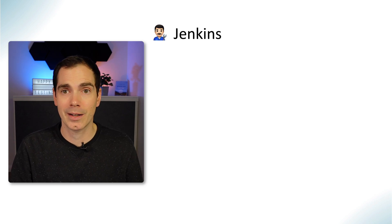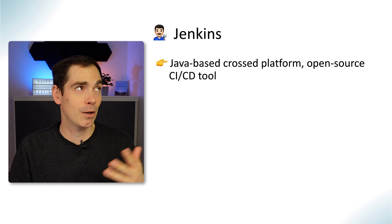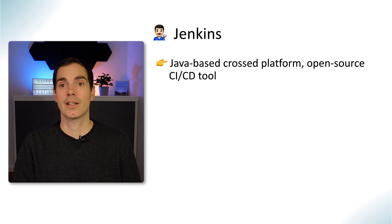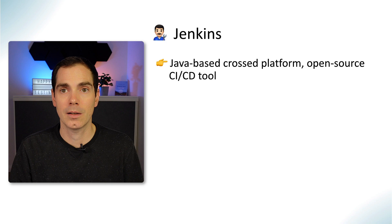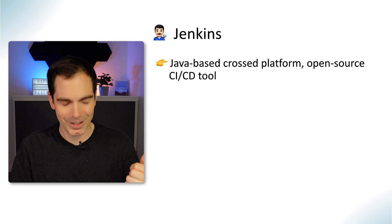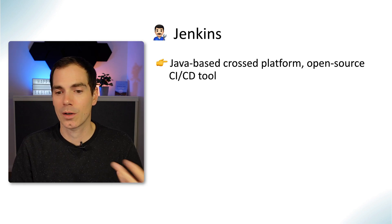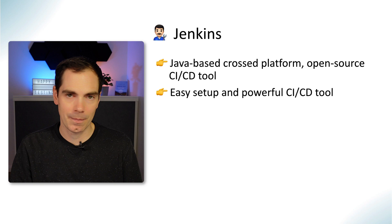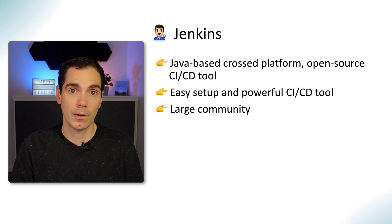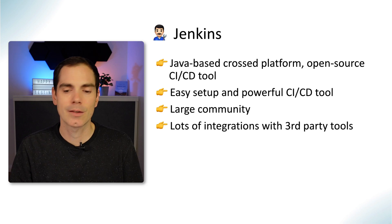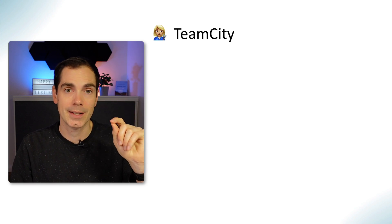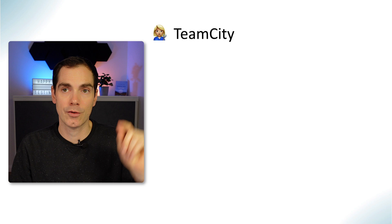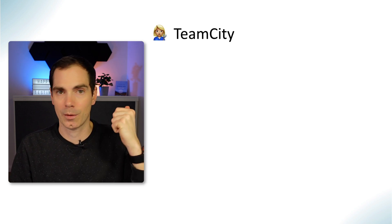The first one — and probably the most popular — is Jenkins. It's a Java-based, cross-platform, open-source CI/CD system. You can download the project, install it on Windows, Mac, or Linux, and run it. It's a powerful tool with an easy setup. It has a really large community of developers and companies using it, and lots of integrations with third-party tools, making it really easy to extend the Jenkins environment.